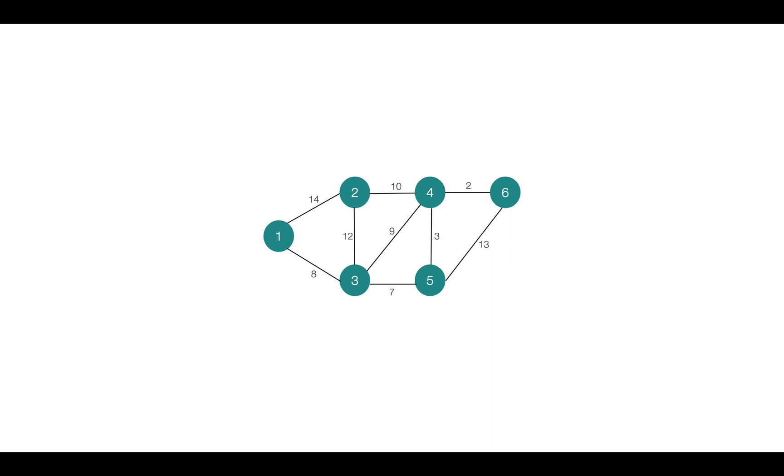Well, we all are now familiar with graphs. This is a weighted undirected graph. So the spanning tree of this graph will be a subgraph of this graph that is connected and acyclic and is having all the vertices present in this original graph.